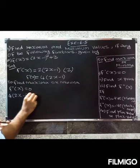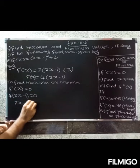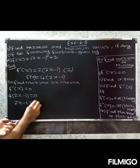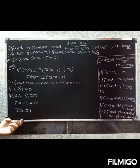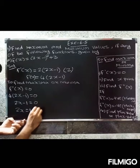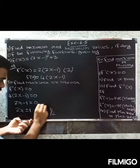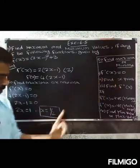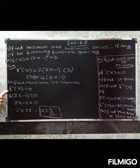So 2x - 1 = 0, which gives 2x = 1, therefore x = 1/2. So the critical point is x = 1/2. Now find f''(x).